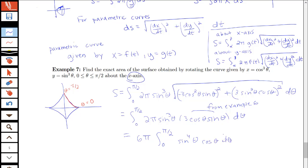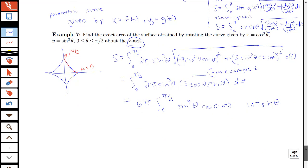So it looks like I can do a u substitution here. So we can let u be equal to sine θ so that our du is cosine θ dθ. So we have 6π times the integral.